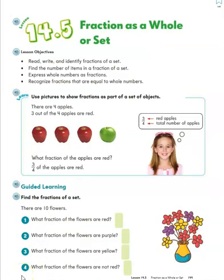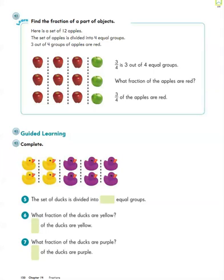So remember last week we looked at fractions as a whole or part of a set, and we were looking at some apples and flowers. We looked at groups. We had these 12 apples that were split into four groups, and three-fourths of them were red, so we figured out that nine is three-fourths of 12.